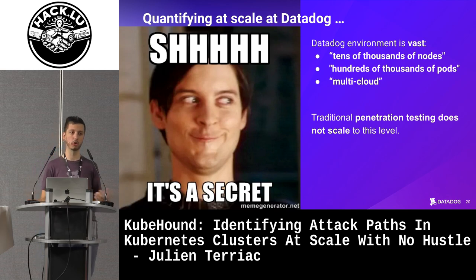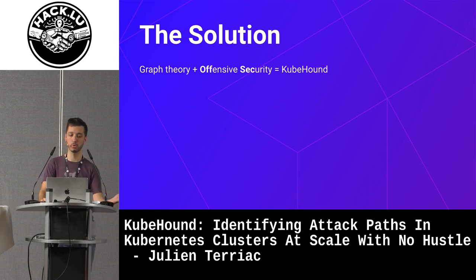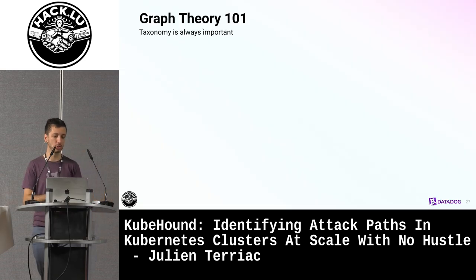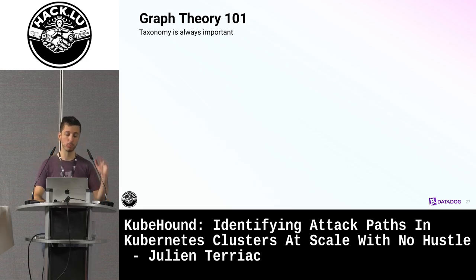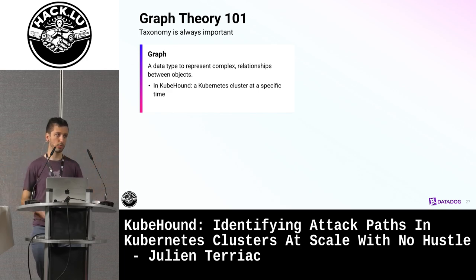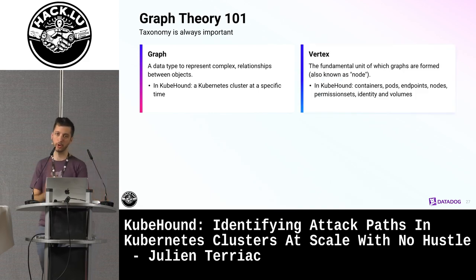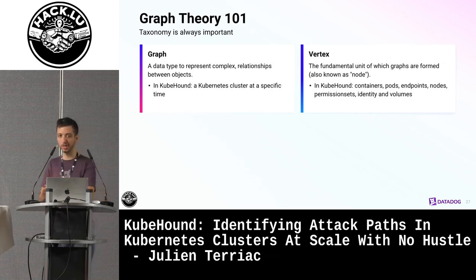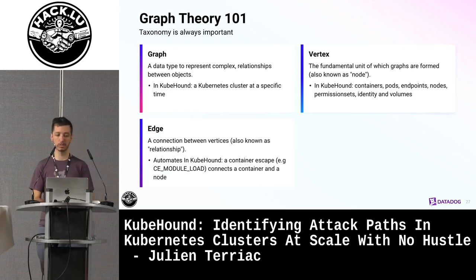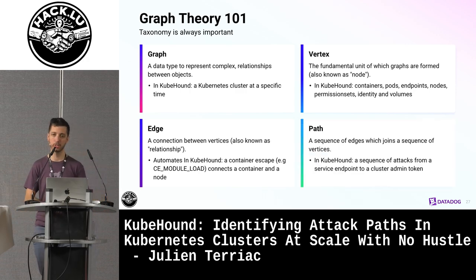The other thing is scale. When you have one cluster and a few pods, it's fine. But when you have hundreds of clusters with hundreds of thousands of pods, it's another story, and traditional pen testing analysis doesn't work. You need to be able to scale and automate. The solution we came up with is to apply graph theory to offensive security. A quick taxonomy: a graph is a representation of objects connected to one another. We have vertices — also called nodes in common language, but I'll say vertices to avoid confusion with Kubernetes nodes. When you link vertices, you have edges, which represent what an attacker can do from one entity to another. When you link several edges and vertices together, you have a path.